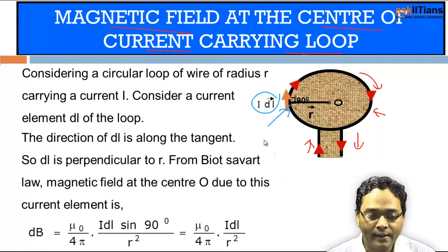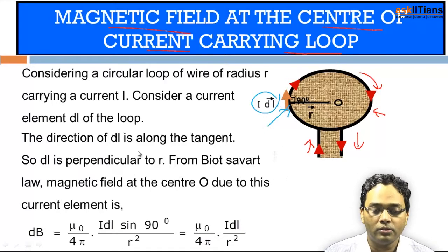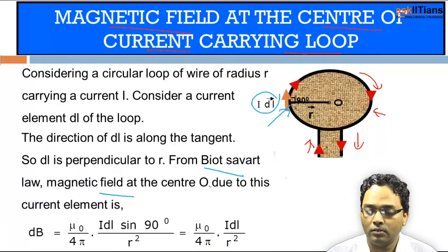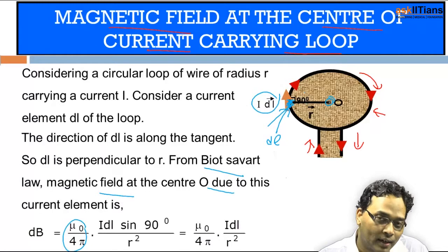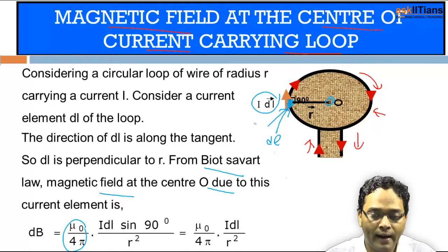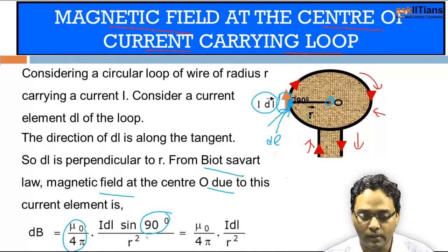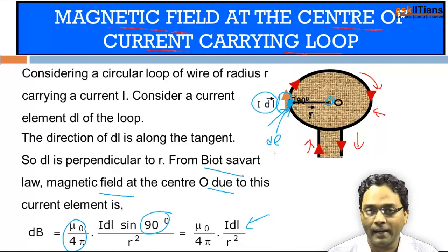The direction of DL is along the tangent. Since DL is perpendicular to R, from the Biot-Savart law the magnetic field at center O is given by taking a small current element of length DL — since the current element makes an angle of 90 degrees with R, IDL sin90 divided by R squared gives us mu-naught divided by 4π times IDL over R squared. This is the magnetic field produced by a small element.